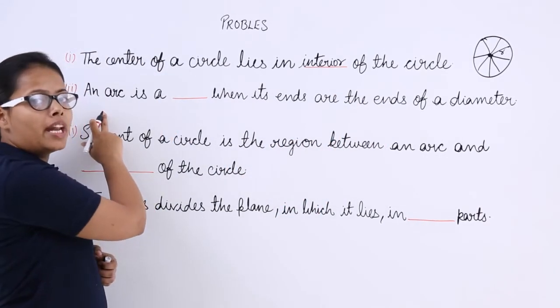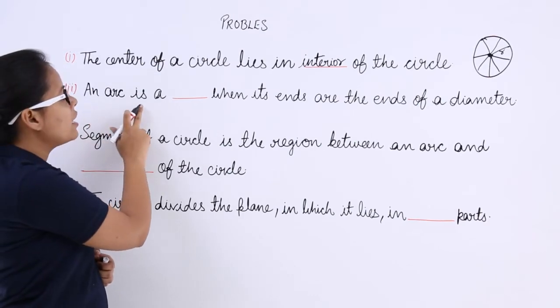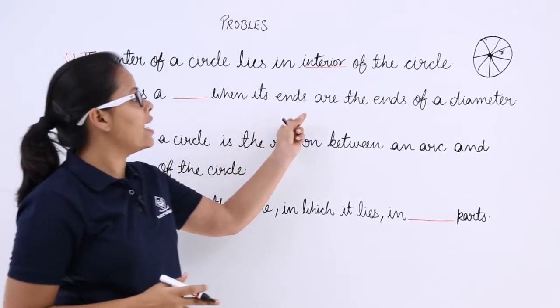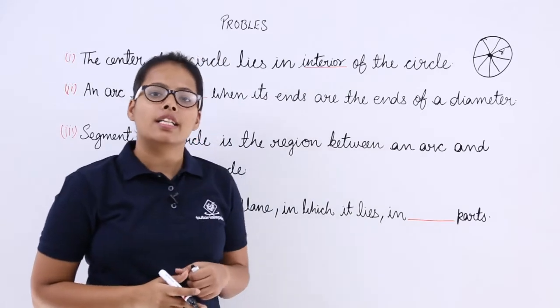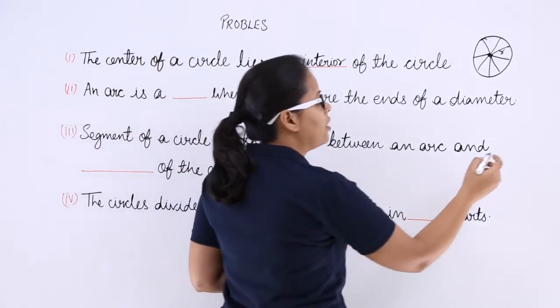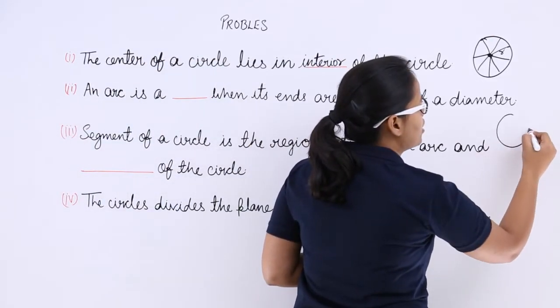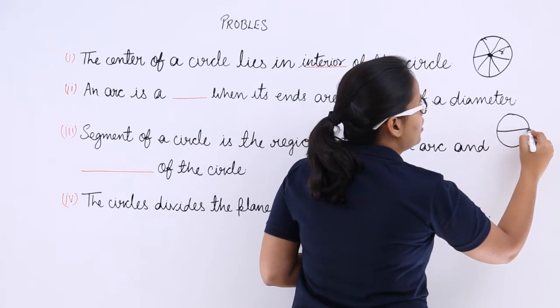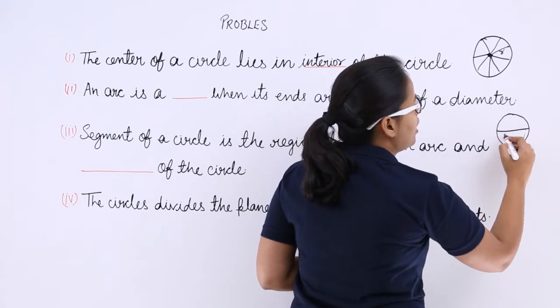And in the second problem, it has been asked an arc is a blank when its ends are the ends of a diameter. This is a circle here. This is an arc, this is an arc, and this is an arc.